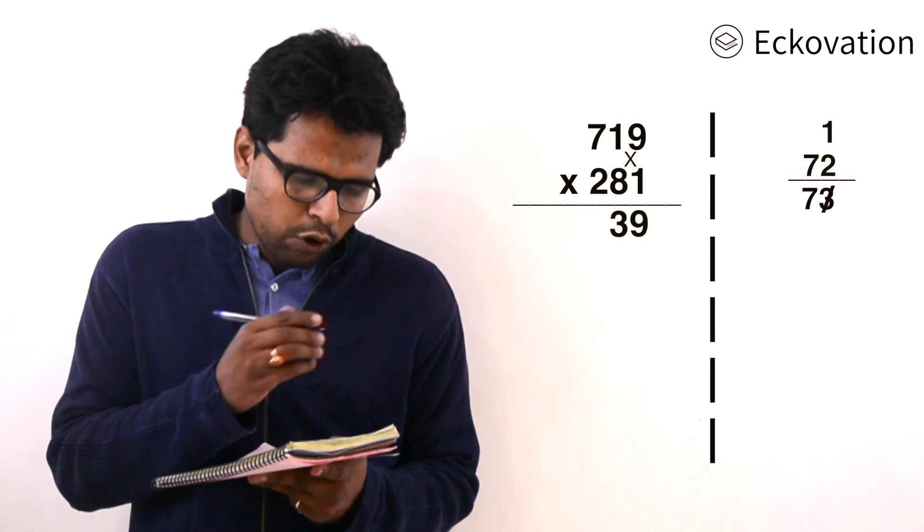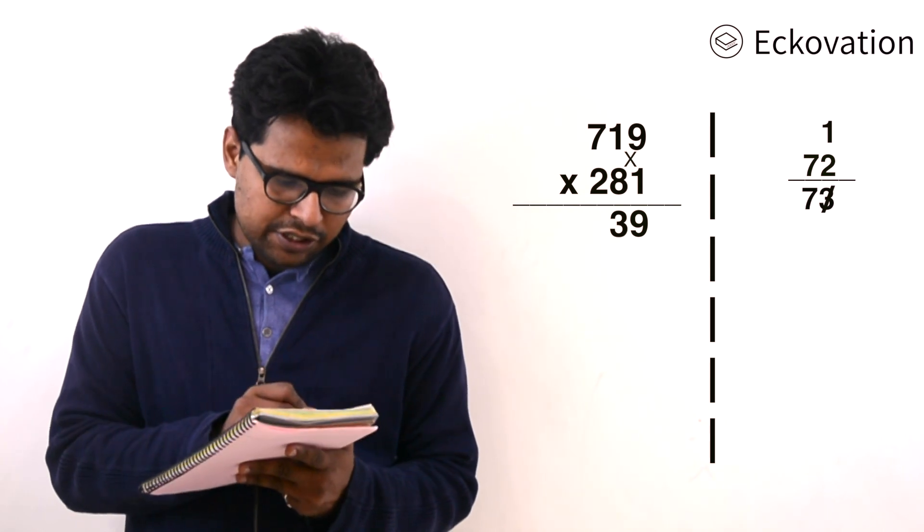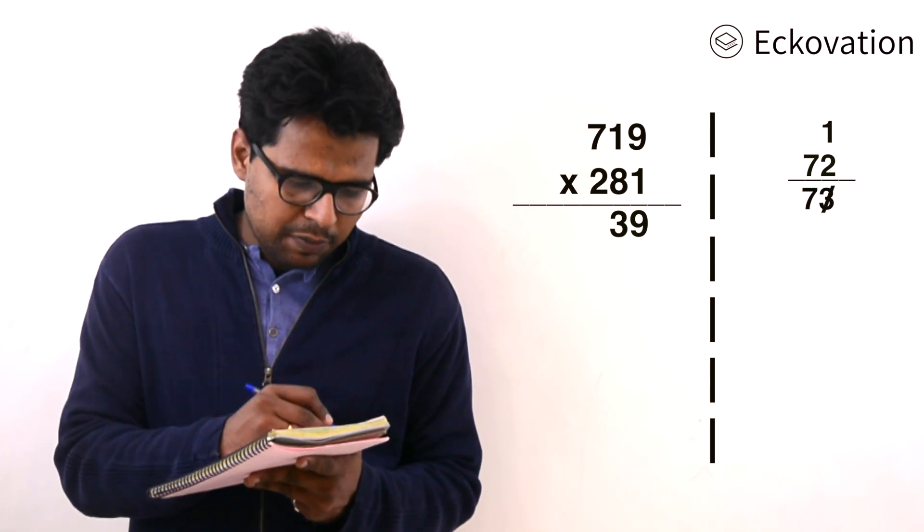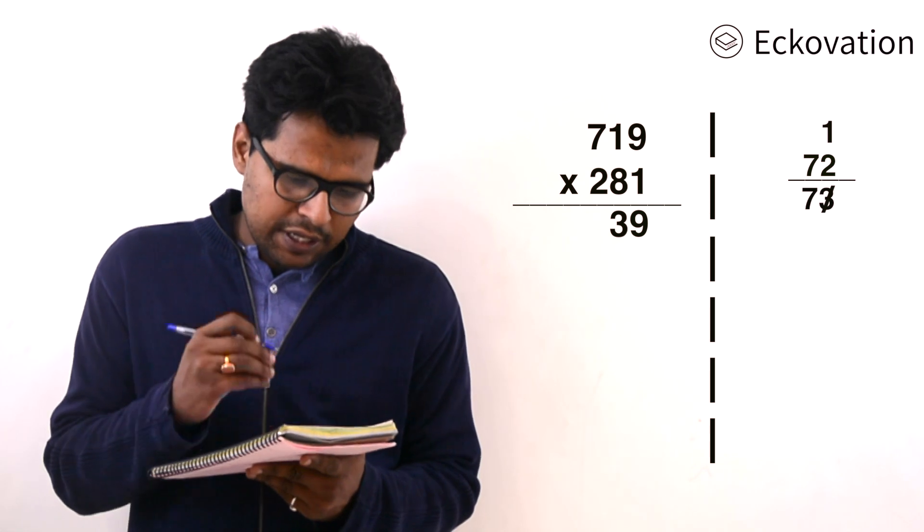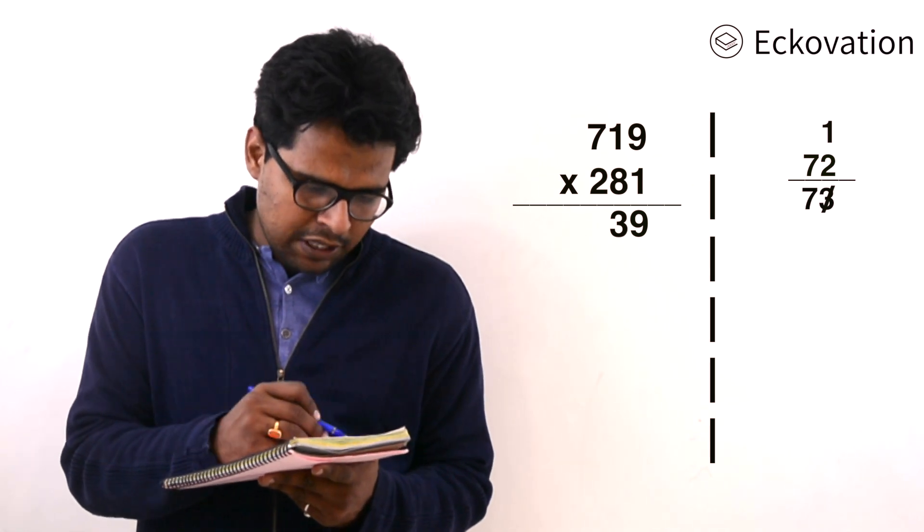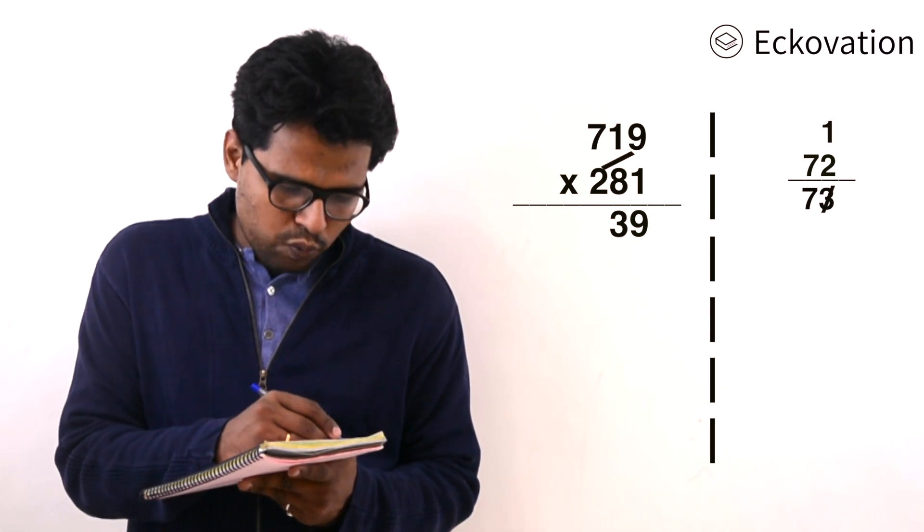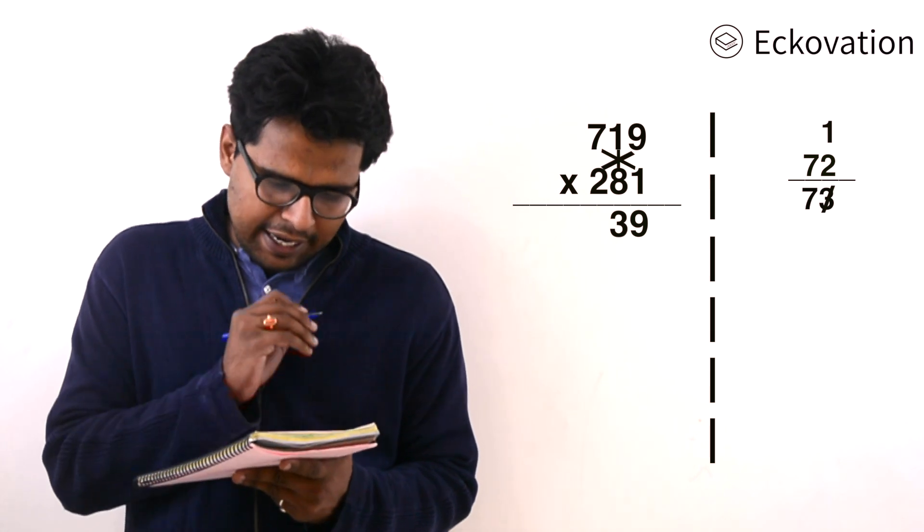Now we'll jump to the third section. Here we are going to multiply 2 with 9, 1 with 7, and 1 with 8.